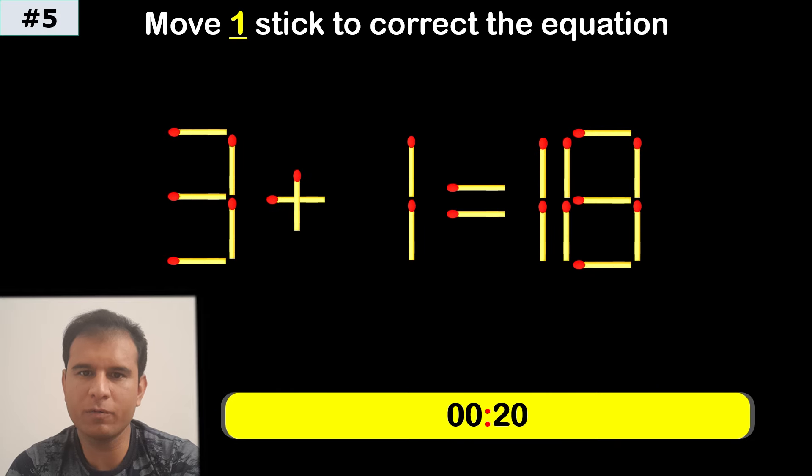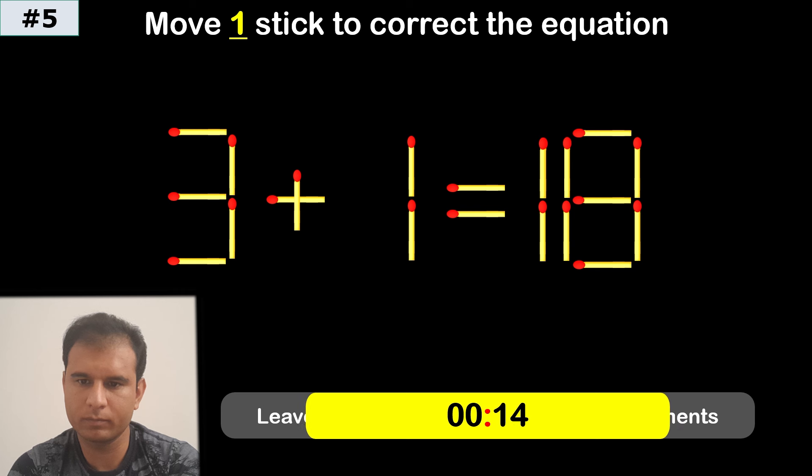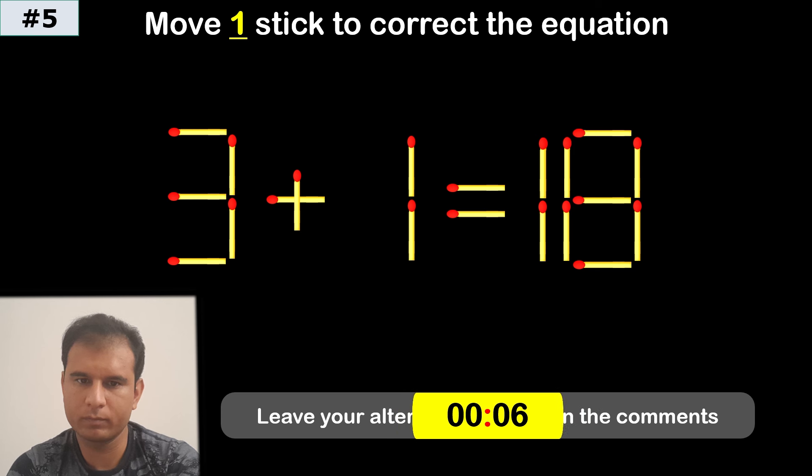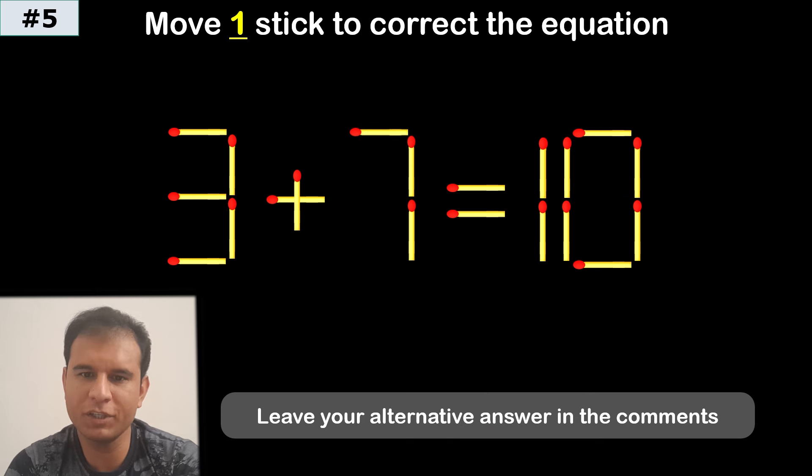And puzzle number 5. The answer is 3 plus 7 equals 10.